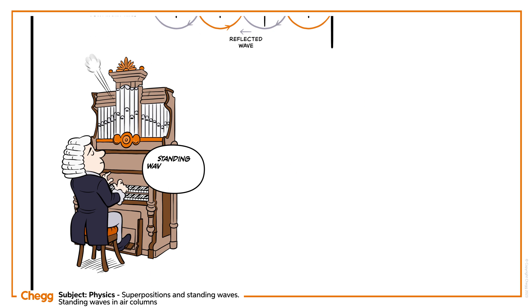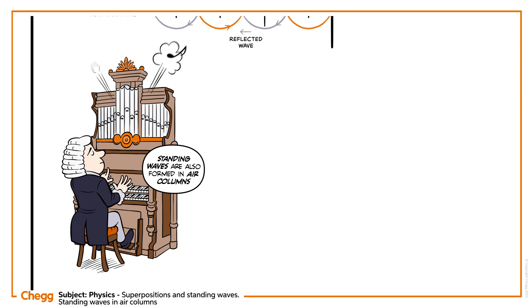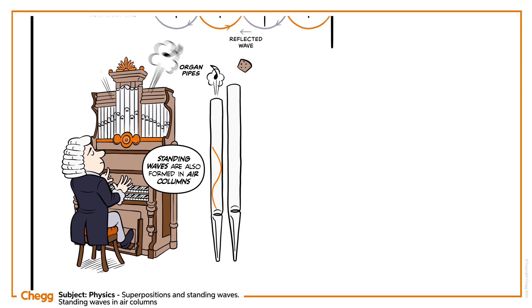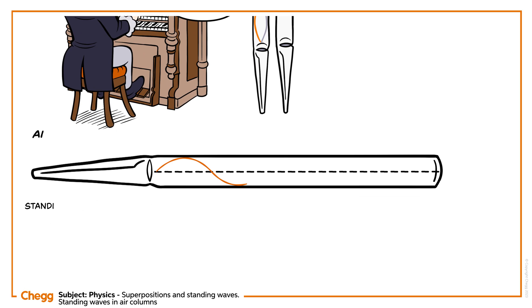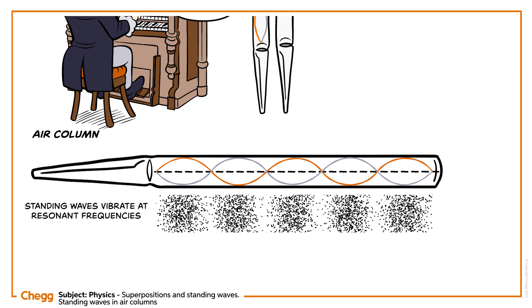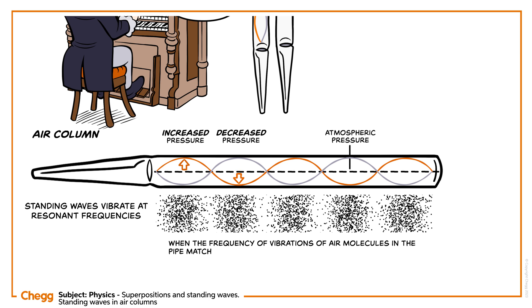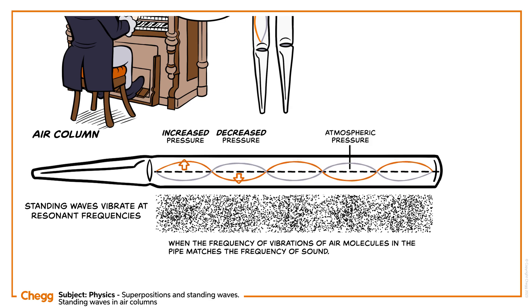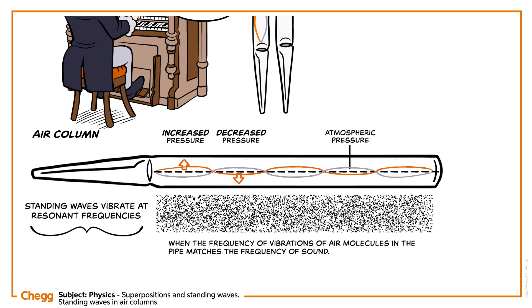Standing waves also form in air columns, and air columns are also called organ pipes. There are two types of organ pipes: open pipes and closed pipes. The standing waves formed in air columns vibrate at resonant frequencies when the frequency of vibrations of air molecules in the pipe matches the frequency of sound. These resonant frequencies in air columns are called harmonics.